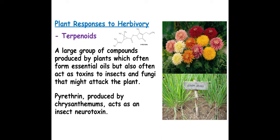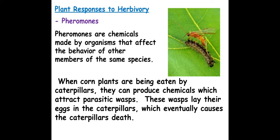Lemongrass is an example of a terpenoid-producing plant. Pheromones are a very clever way for plants to defend against herbivory — these are chemical signals released by plants which affect the behaviour of other species. For example, when corn plants are being eaten by caterpillars, they produce a chemical which attracts parasitic wasps of the caterpillar. Those wasps lay their eggs inside the caterpillars, which eventually causes the caterpillars to die off. This is seen in various different species of plant.